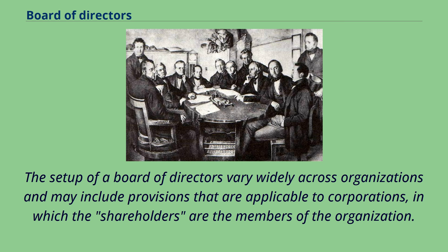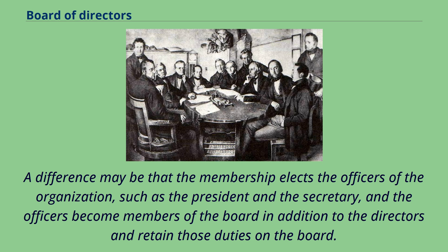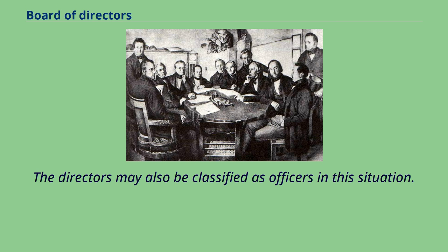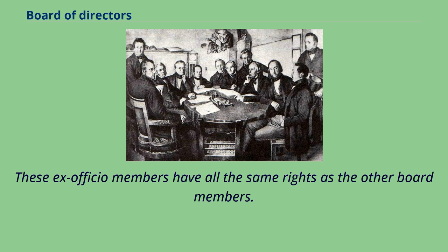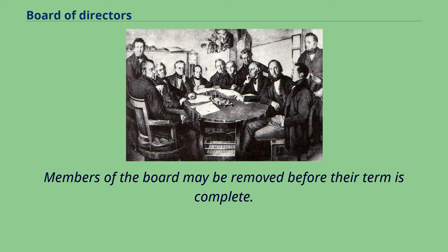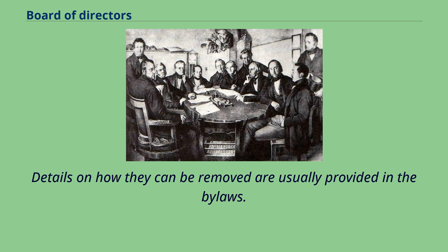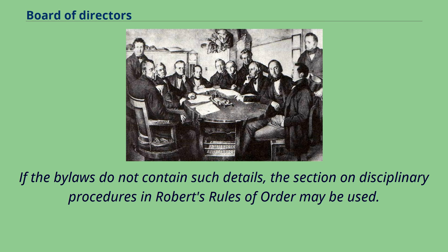The setup of a board of directors varies widely across organizations and may include provisions applicable to corporations, in which the shareholders are the members. A difference may be that the membership elects the officers of the organization, such as the president and the secretary, and the officers become members of the board in addition to the directors. There may also be ex-officio members of the board — persons who are members due to another position that they hold — and these ex-officio members have all the same rights as the other board members. Members of the board may be removed before their term is complete, with details on how they can be removed usually provided in the bylaws. If the bylaws do not contain such details, the section on disciplinary procedures and Roberts' rules of order may be used.